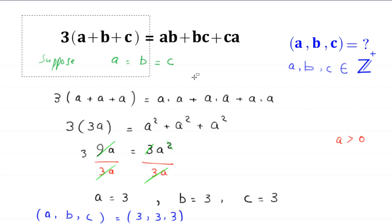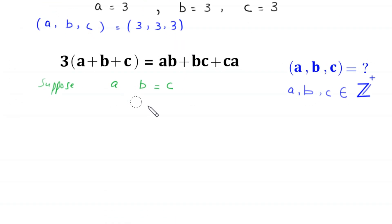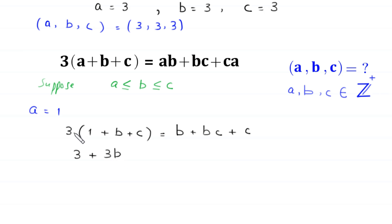Now we copy the original equation. We suppose that a is less than or equal to b and b is less than or equal to c, and set the value of a equal to 1. Then this equation will become 3 times (1 plus b plus c) equals b plus bc plus c. Distributing the 3 gives 3 plus 3b plus 3c equals b plus bc plus c.